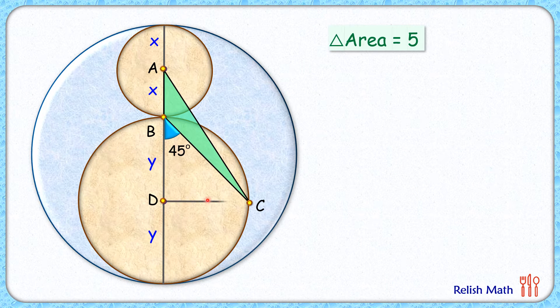Let's join this center D to point C, that's radius or y cm. So triangle BDC is an isosceles triangle. So this angle will be 45 degrees and by angle sum property this angle here will be 90 degrees.